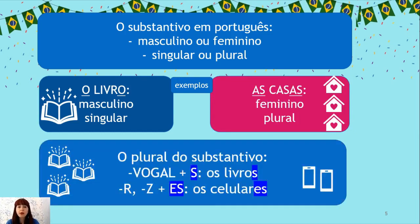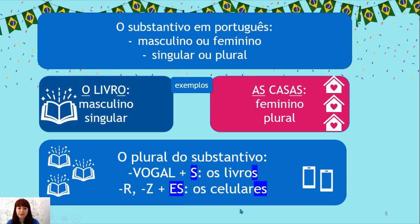O plural do substantivo — how do we form the plural of nouns in Portuguese? If a noun finishes in a vowel, we just add S: os livros. If a noun finishes in R or Z, we add ES: os celulares.